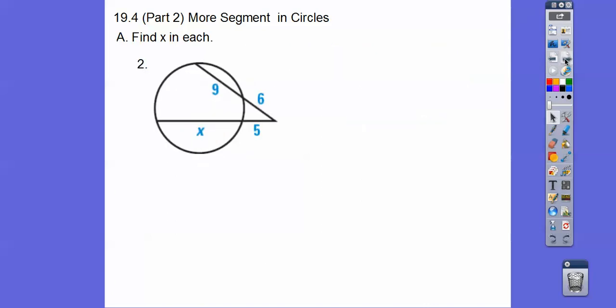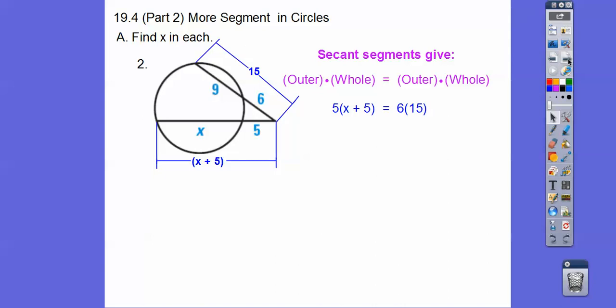Here this one it goes outer times whole, outer times whole. So the whole here is 6 plus 9, which is 15. The whole here is 5 plus x or x plus 5. So outer times whole, here's the outer, the 5, times the whole, which is 5 plus x, and then equals outer times the whole right there. Then distribute and solve for x and we get 13.